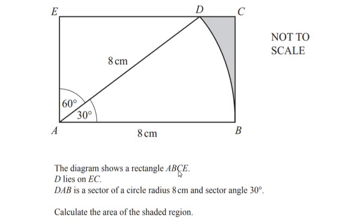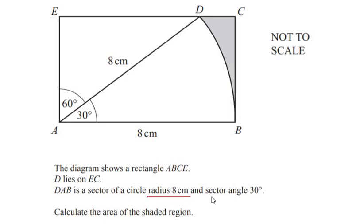Hello and welcome to my channel. In this video we are going to solve an example which is a combination of trigonometry and sector area. The diagram shows a rectangle ABCE, where D lies on EC. TAB is a sector of the circle with radius 8 centimeters and a sector angle of 30 degrees.